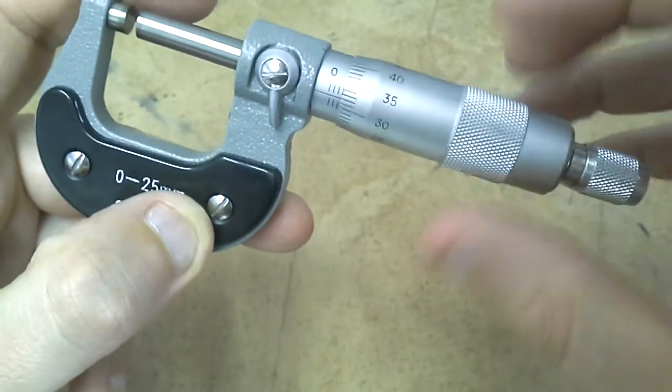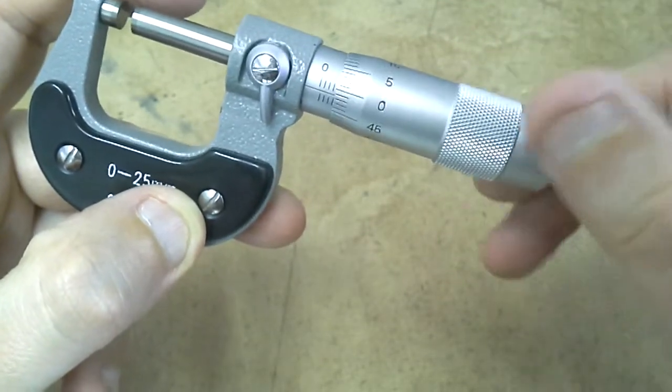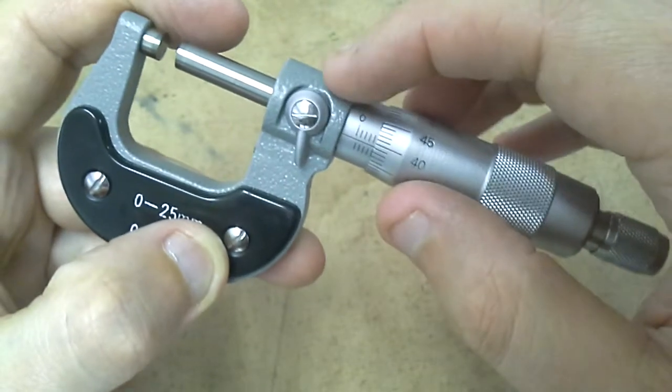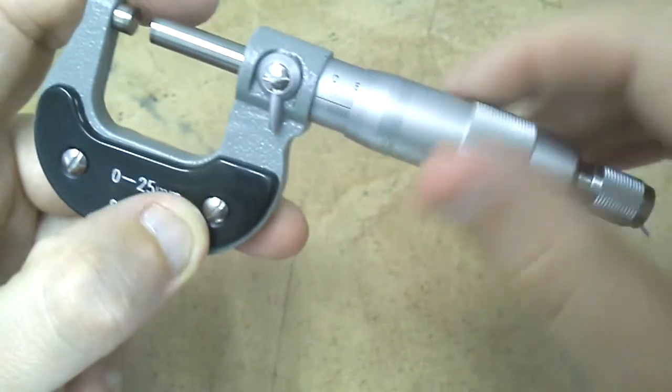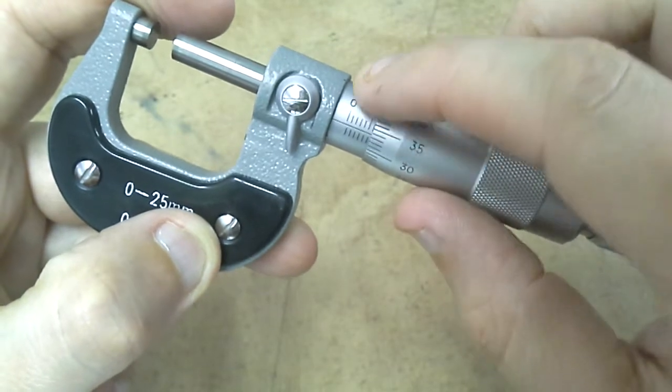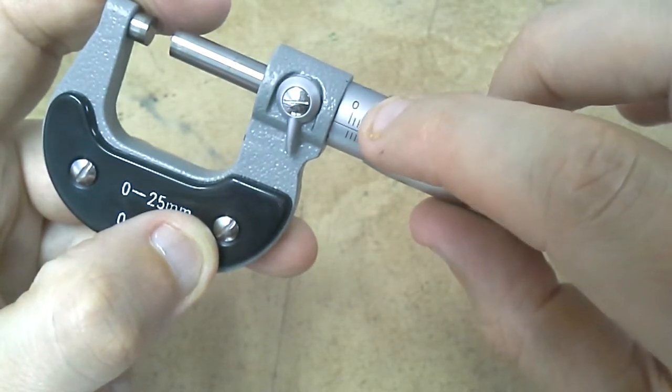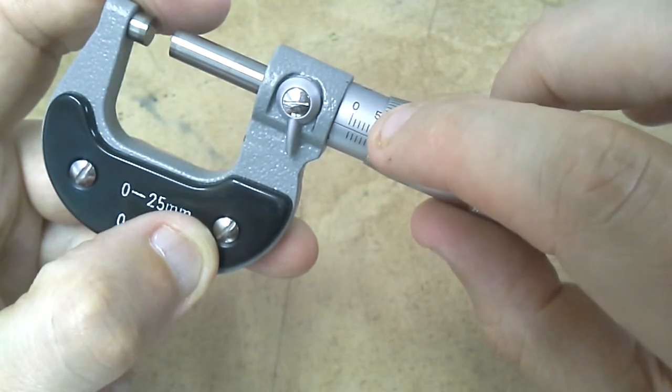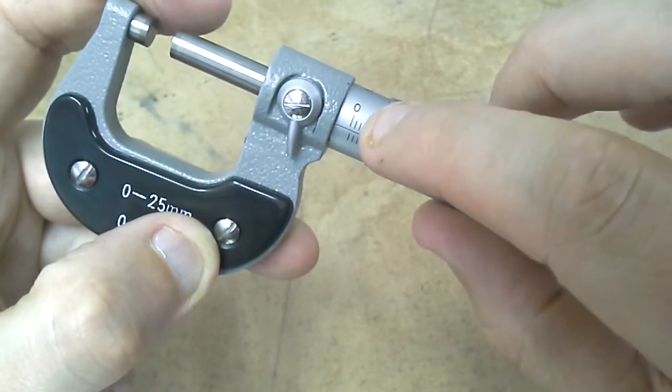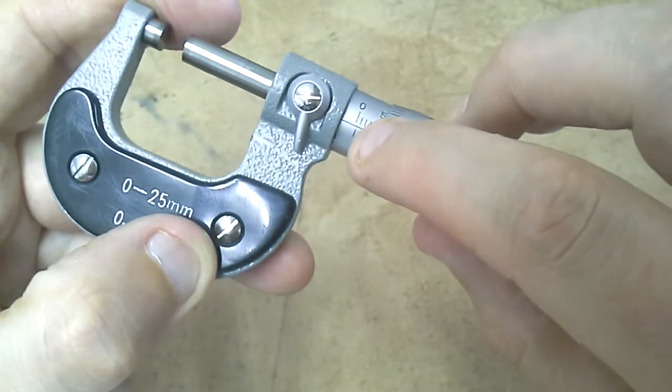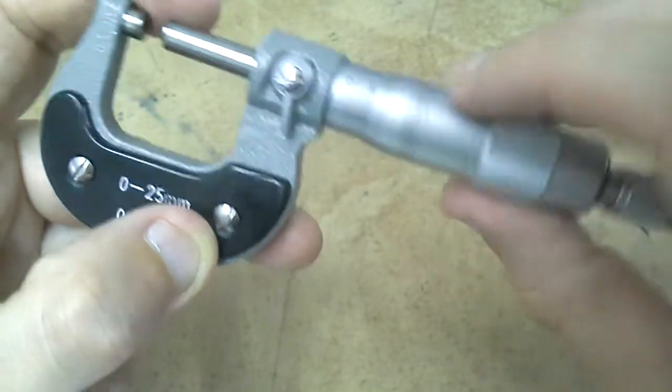So there are numbers that go all the way around the thimble and also we've got markings along here, so 0, then that's 1mm at the top, 2, 3, 4, 5mm here and this section here is every 1.5mm.